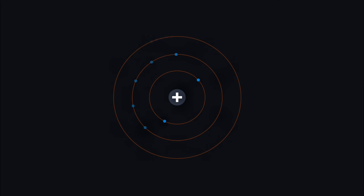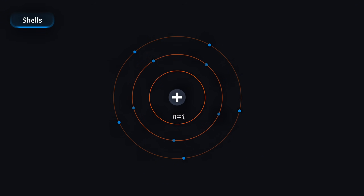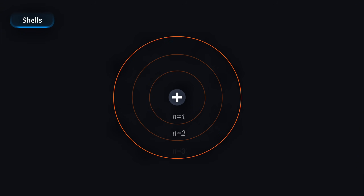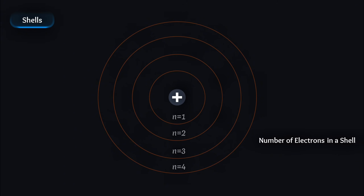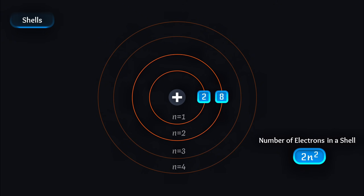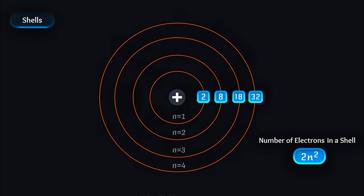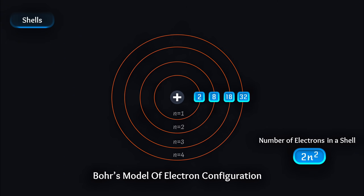Electrons orbit the nucleus in different shells. The first shell closest to the nucleus is n=1, the second shell is n=2, the third shell is n=3, and so on. The formula for finding the maximum number of electrons a shell can hold is 2n². So the first shell can hold up to 2 electrons, the second up to 8, the third up to 18, and the fourth up to 32 electrons. This arrangement is known as Bohr's model of electron configuration.